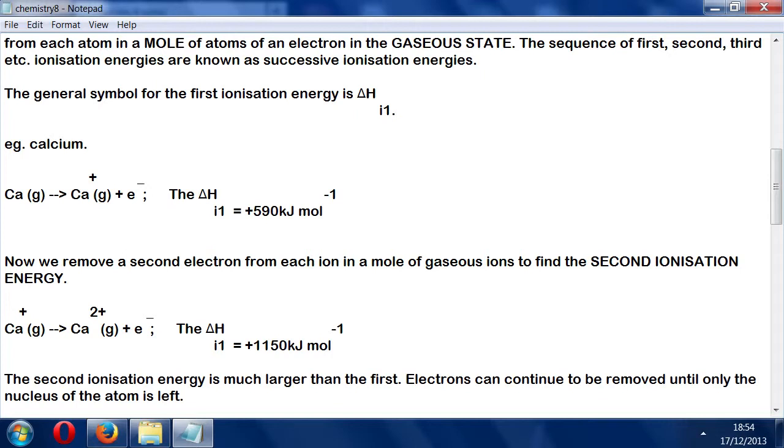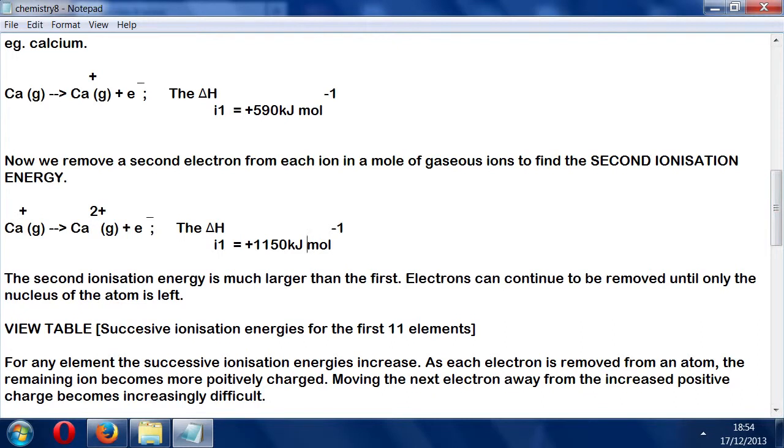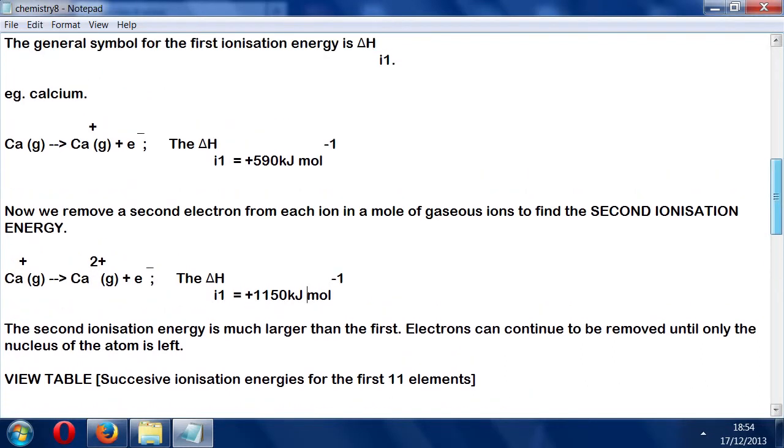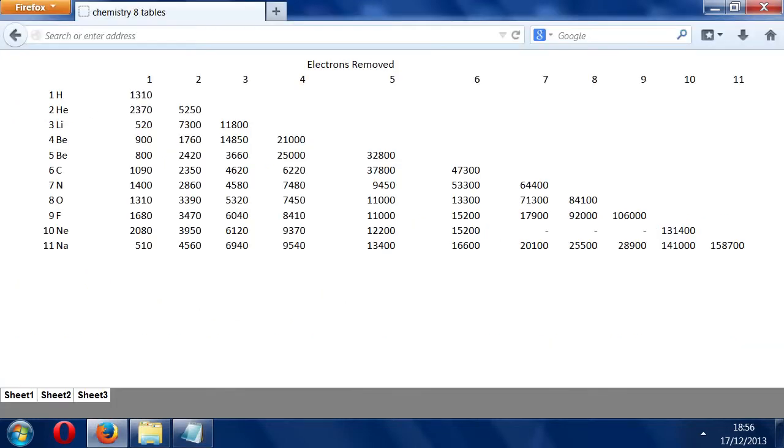Electrons continue to be removed until only the nucleus of the atom is left. Now I've got another table here, a second of two tables showing successive ionization energies.